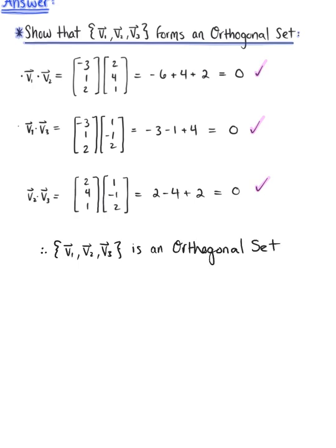Now, since this is an orthogonal set of vectors, we know that this automatically implies that this set of vectors is linearly independent. So we can say that vectors V₁, V₂, V₃ are orthogonal and linearly independent.